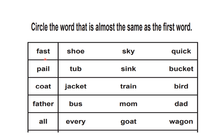Let's start! See here — the first word is 'fast.' For fast, we are not going to say the opposite; we will say the exact or almost the same meaning. So fast — is it 'shoe'? No. 'Sky'? No. 'Quick'? Yes! Fast and quick are similar. So we will circle the word 'quick' and give a hyphen to indicate its meaning — fast means quick.